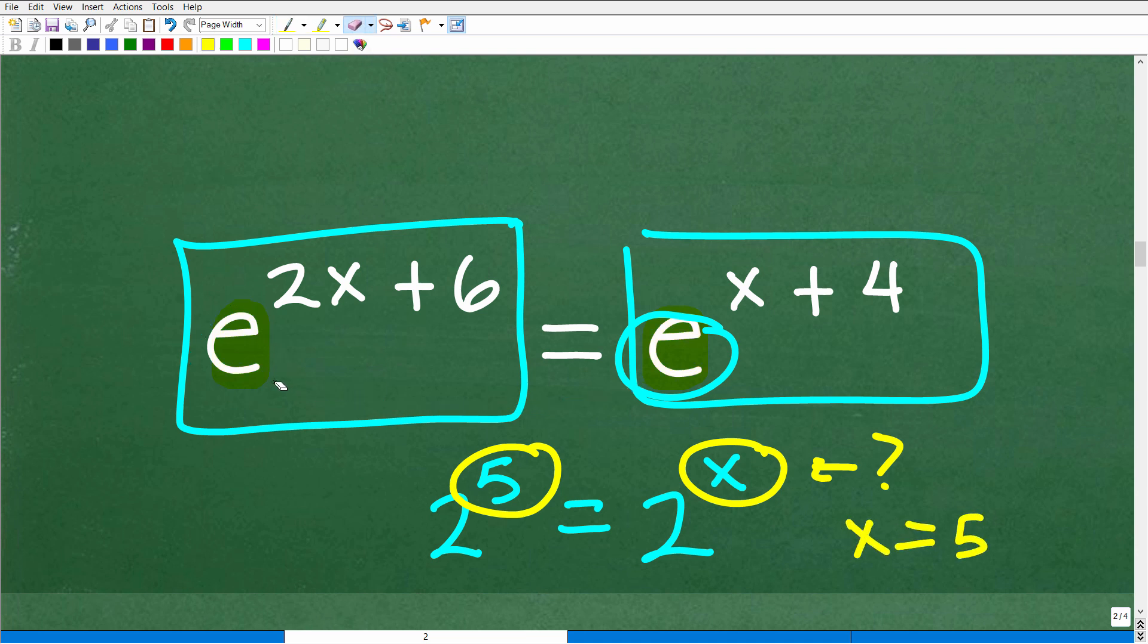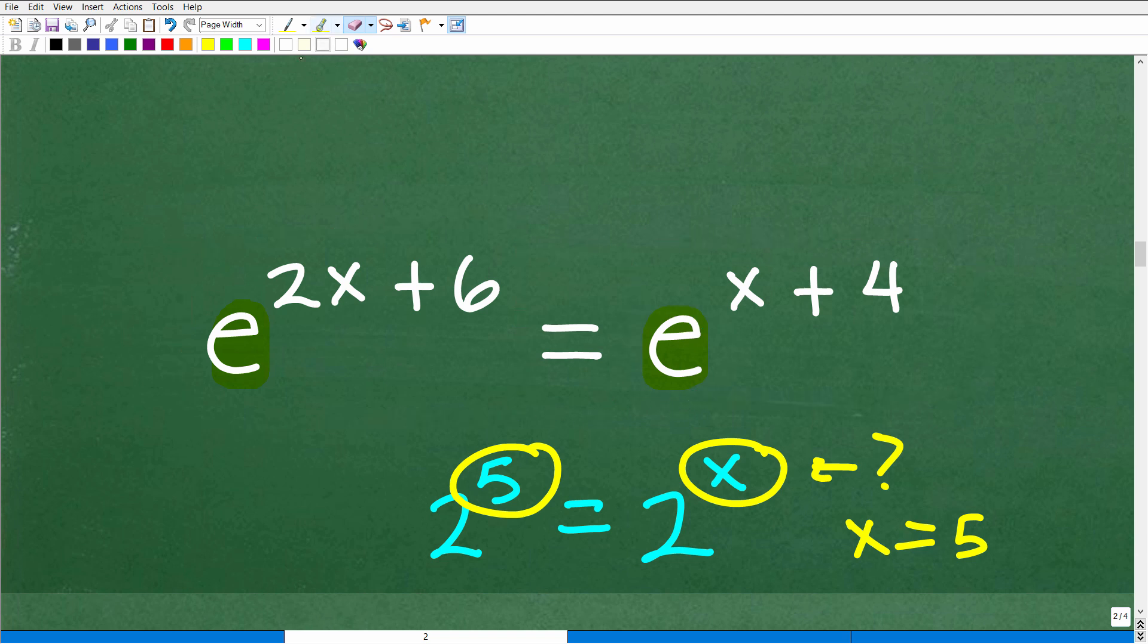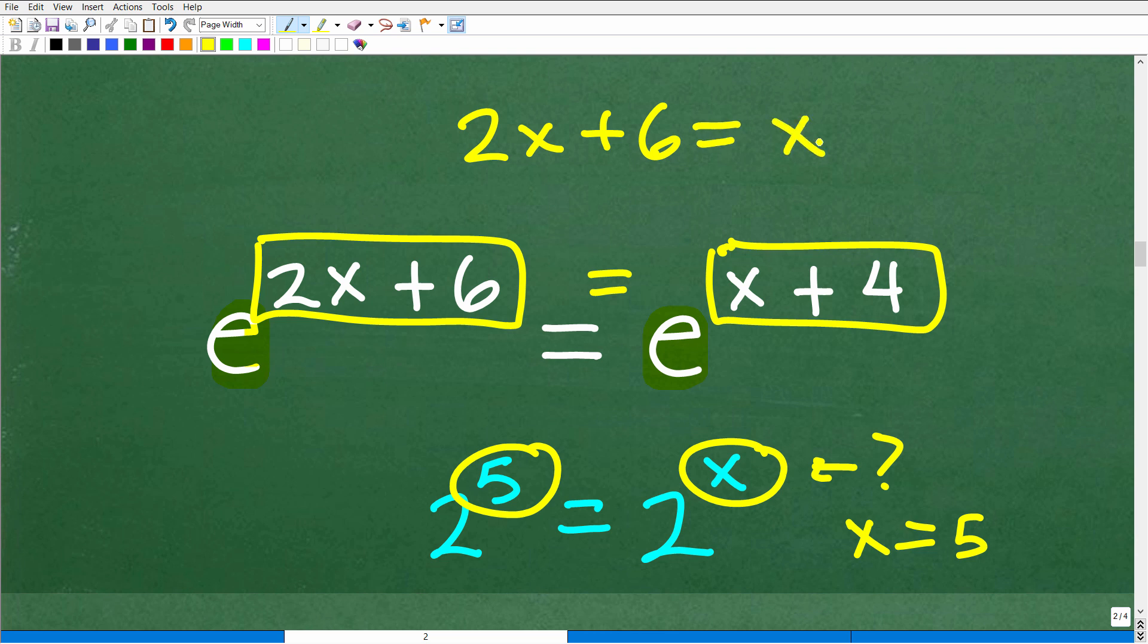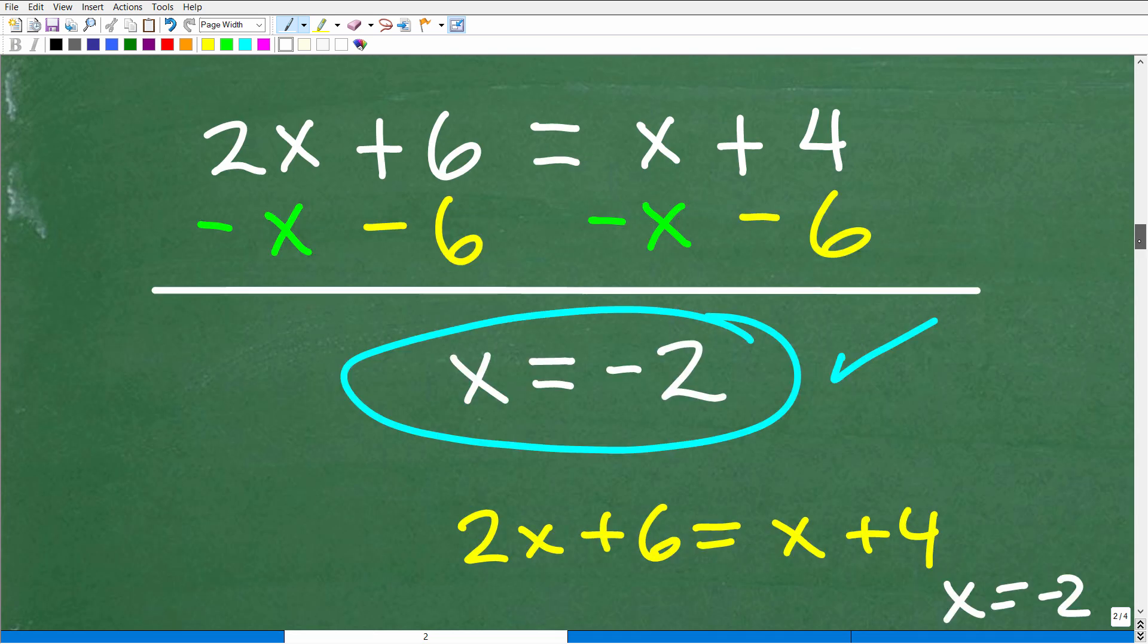Well, same thing here. If you understand, oh, this is a power, and you're like, well, look, the bases are the same. Well, these exponents, these values up here must be the same. So we could just simply set these equal to one another and solve this basic algebraic equation. And that's really what I was getting at, that this is the easiest path forward to solve this equation. Of course, here you'll get the correct answer, x is equal to negative 2, right?